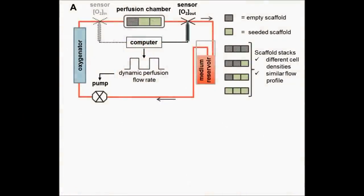Twenty-one scaffold combinations with different total cell numbers were perfused in the bioreactor system. The oxygen concentration at the inlet of the perfusion chamber is kept constant with the aid of an oxygenator and the oxygen concentration at the outlet of the perfusion chamber is registered with an oxygen sensor. Note that there is only one sensor used for this approach.